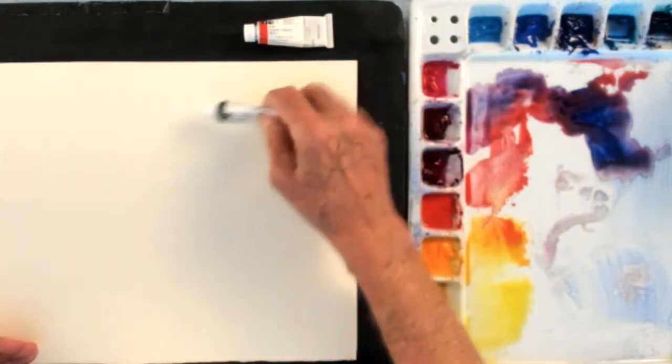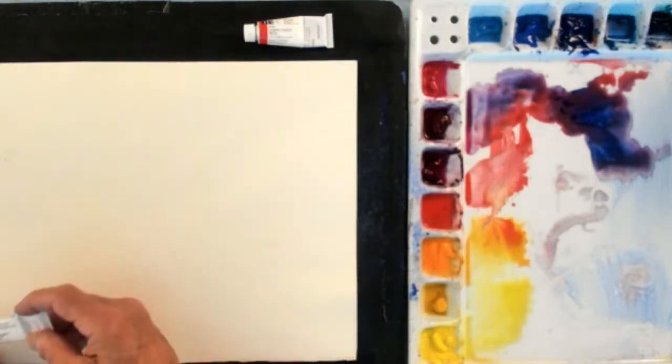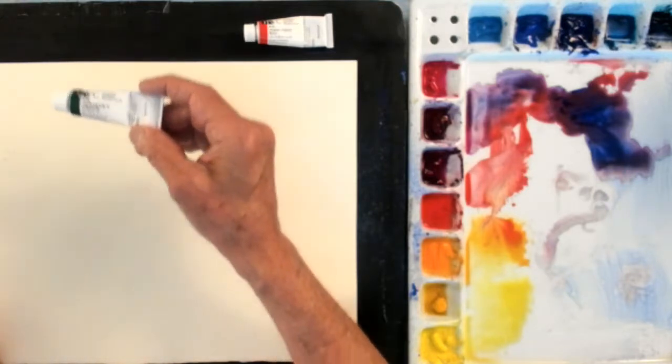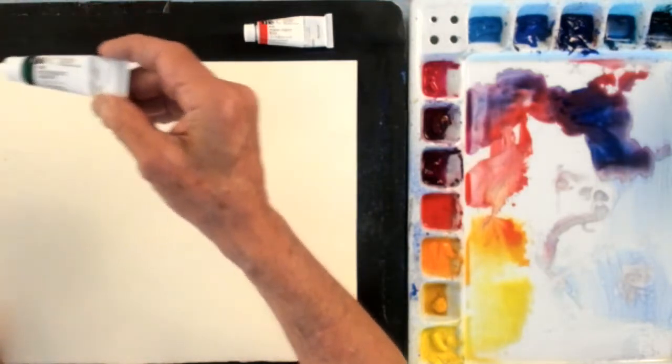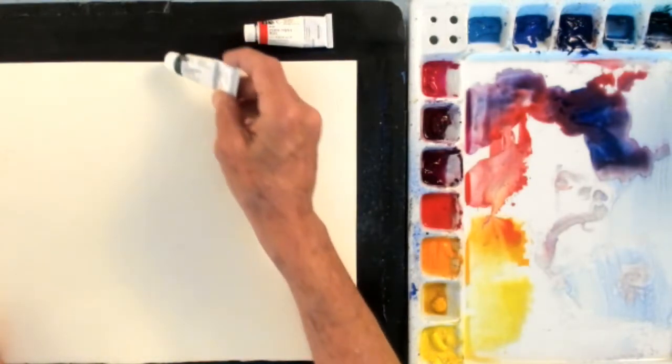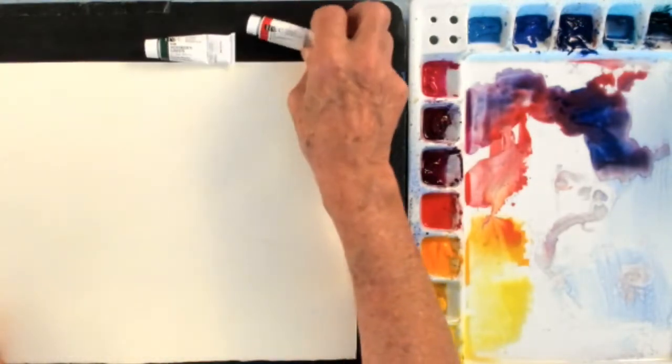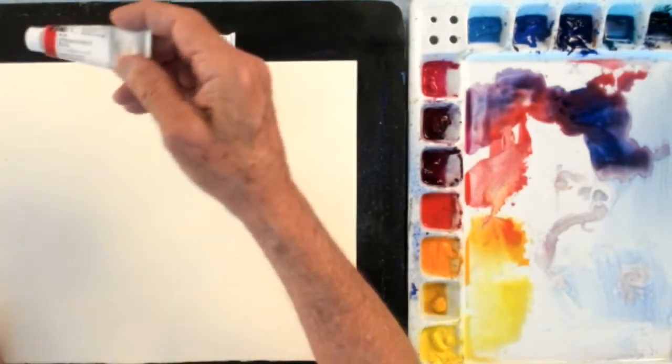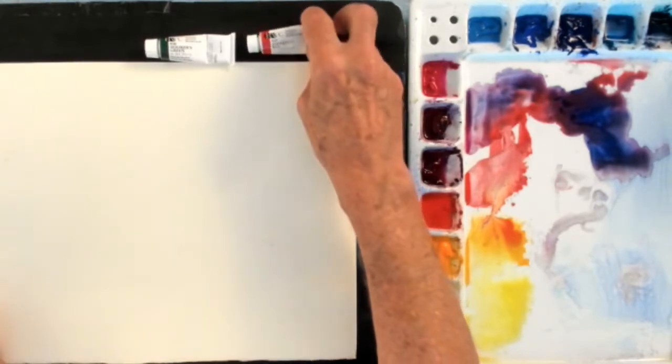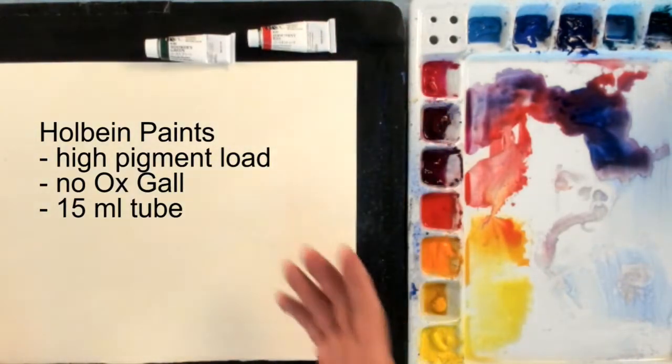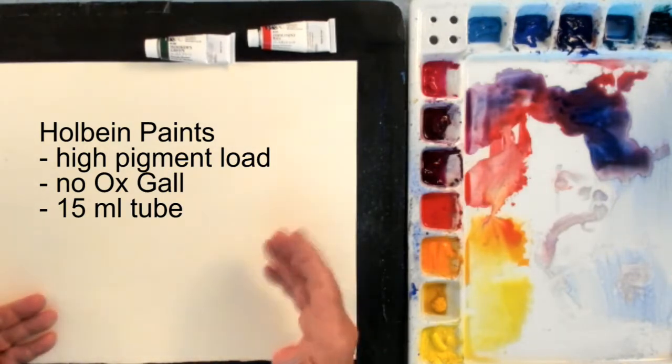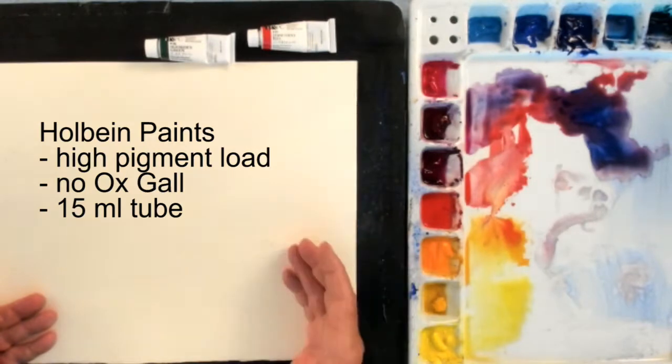The paints I use, this is a Holbein brand, artist quality paint. This happens to be Hooker's Green. It's a 5 milliliter tube, and here's a tube of, this happens to be permanent red. But the 5 milliliter tube of paint goes a long way, that's probably the most economical way to buy paint, is buy a larger tube and then spread it out on your palette.